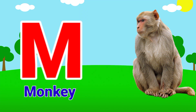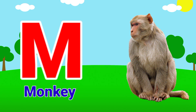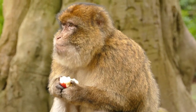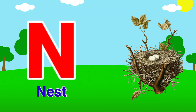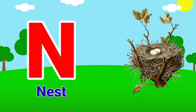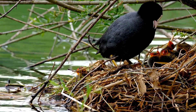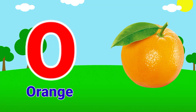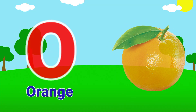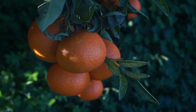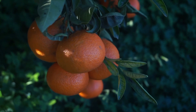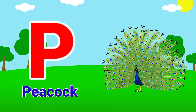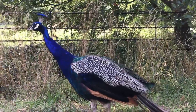M. M for monkey. Monkey. N. N for nest. Nest. O. O for orange. Orange. P. P for peacock. Peacock.